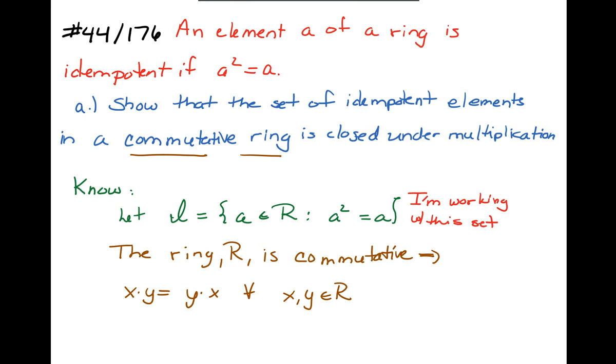I also know that this ring is commutative, so I know that xy is equal to yx for all x, y belonging to the ring. Notice that I didn't reuse a and b because it would be an abuse of variables.